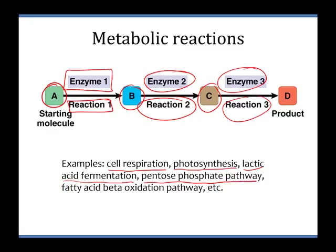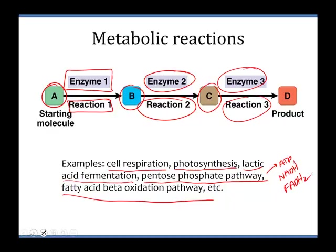The pentose phosphate pathway is actually how we make ATP, NADH, and FADH2 — the physical molecules of ATP, NADH, and FADH2. Fatty acid beta oxidation pathway is another pathway. We are not going to worry too much about these quite yet — they're just examples for us now.